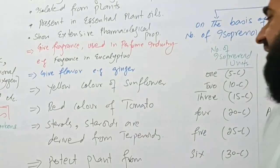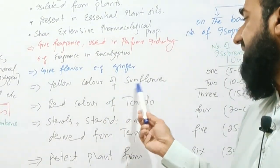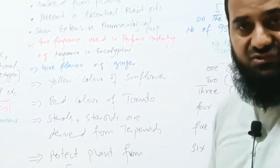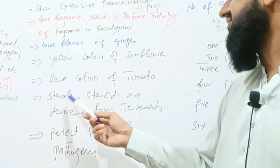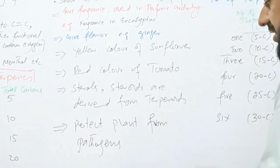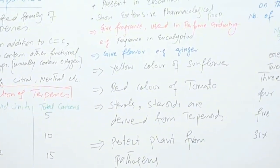Yellow color of the petals of sunflower is due to the presence of terpenoids. Red color of tomato is also due to terpenoids. Sterols and steroids are derived from this class of compound and terpenoids protect the plant from the pathogens.